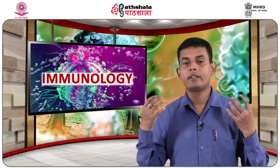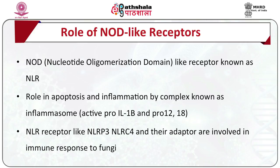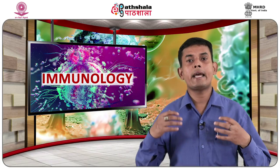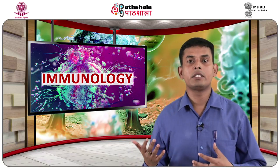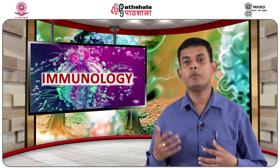NOD-like receptors (NLR) play an important role in apoptosis and inflammation by formation of a complex known as the inflammasome, via activation of pro-interleukin-1β and pro-interleukin-18. The overall activation and formation of the inflammasome leads to development of TH1 and TH17 responses. NLR receptors like NLRP3 and NLRC4 and their adapters are involved in immune response to fungi. In Candida infection, both NLRs are required, but spread is controlled by NLRP3 in mucosal infection.